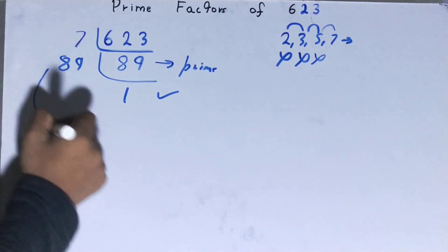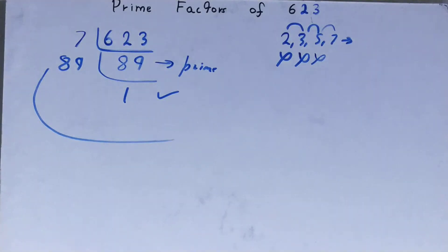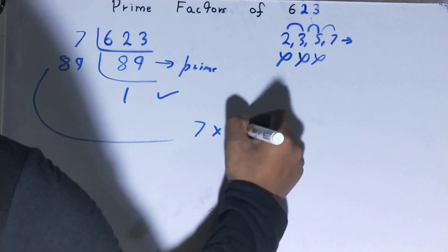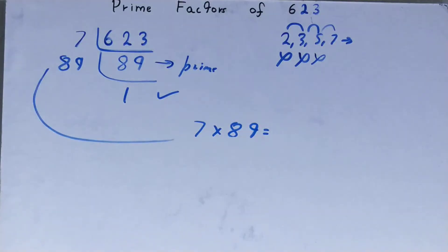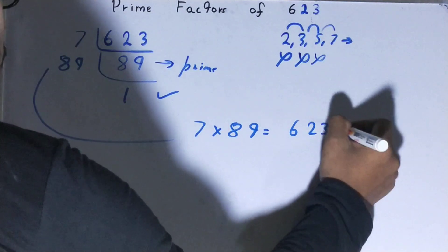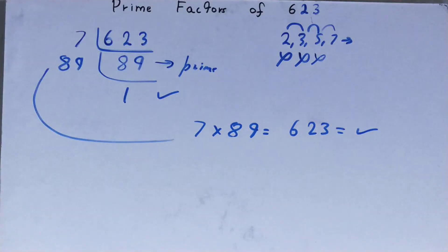Whatever you have on the left-hand side will be the prime factors of the number 623, that is 7 times 89. Now if you want to check whether it is right or not, you can multiply it, and if on multiplying you get the number back again, that means your calculation is correct. If not, you need to recheck.